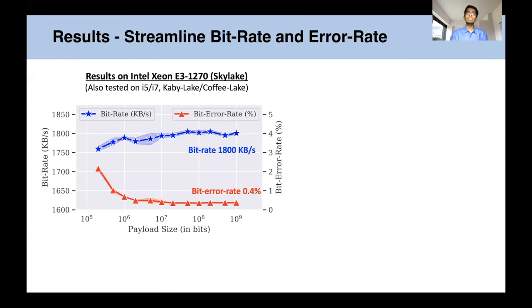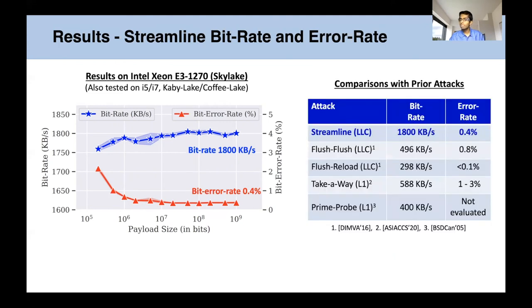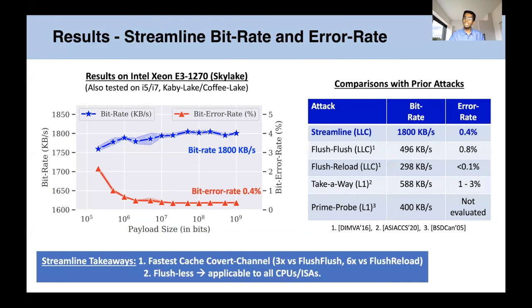With this, Streamline achieves consistent, reliable transmission over billions of bits. Streamline achieves a bit rate of 1800 kilobytes per second at a small error rate of 0.4%. Compared to prior works, Streamline achieves 3 to 6x higher bit rate at a comparable error rate. The takeaways are that Streamline is the fastest known cache covert channel attack, and it is flushless, so it is applicable to all CPUs and ISAs.